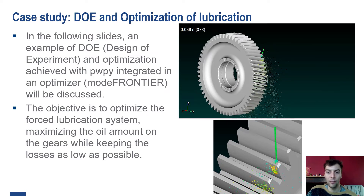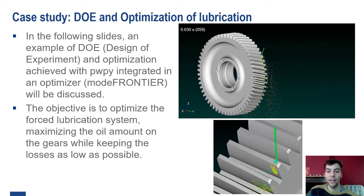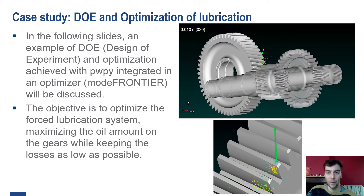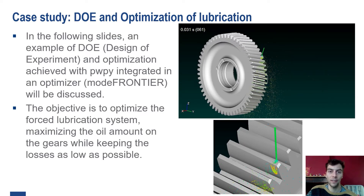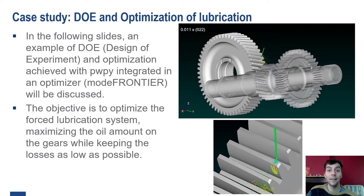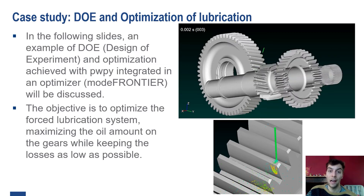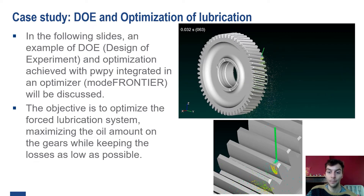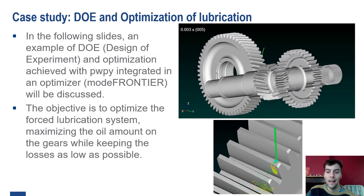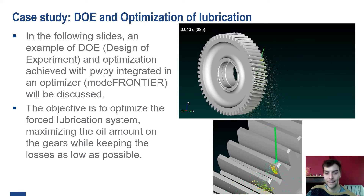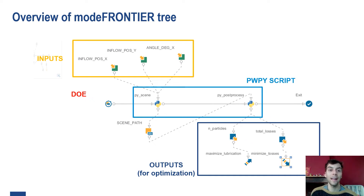The example we will show is a forced lubrication system in which we have to position an inflow and a jet in a specific spot near the meshing area. What we will try to understand is how the position and the orientation angle of the inflow can impact the overall lubrication and also the losses due to the interaction with oil. In this image, we can see a closer look at the inflow and the injected oil on one of the gears.